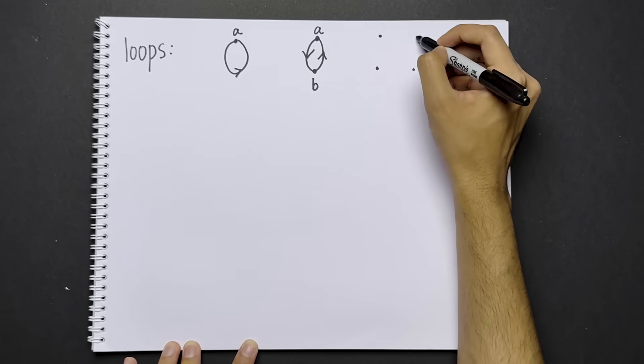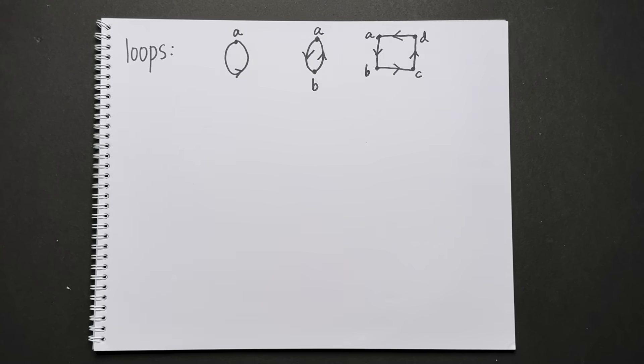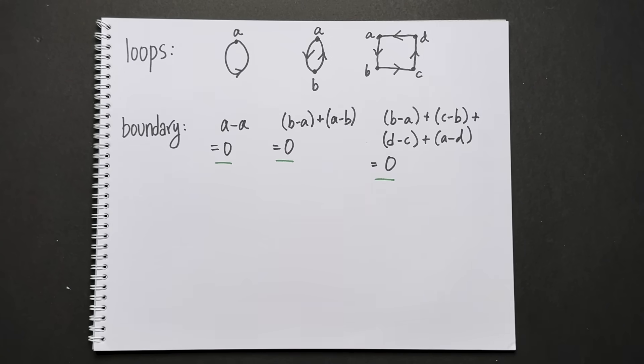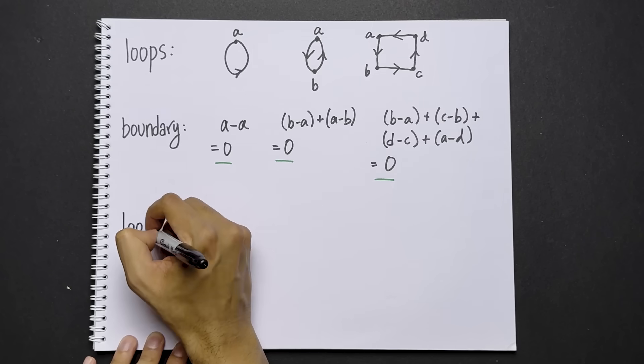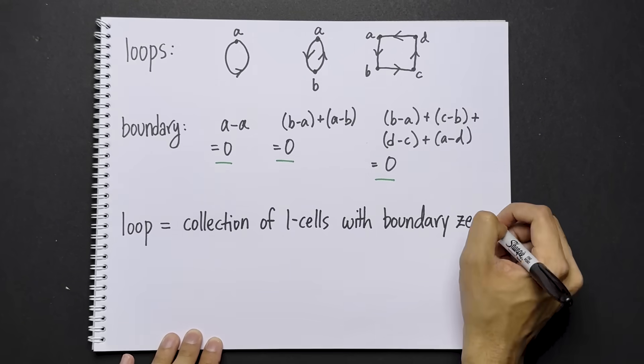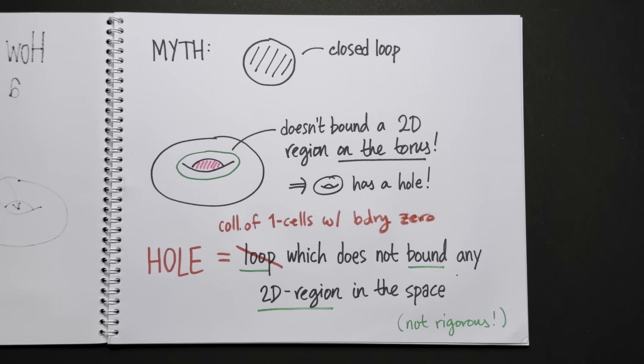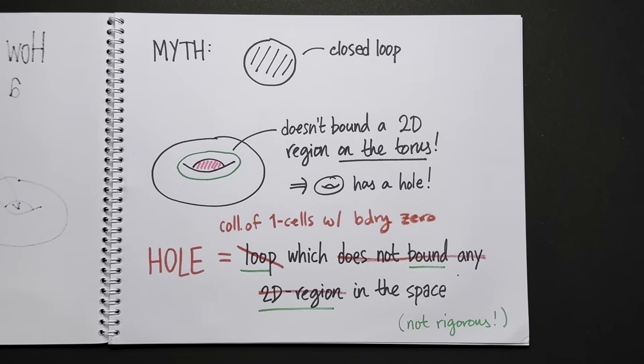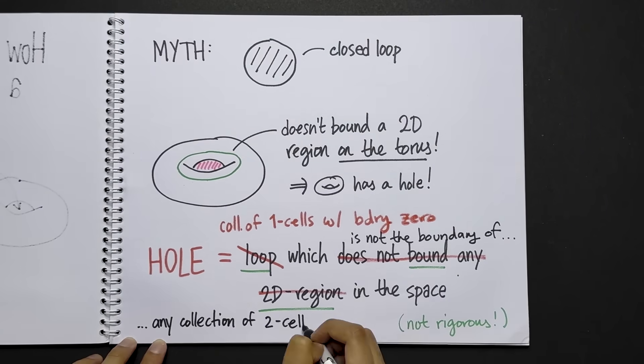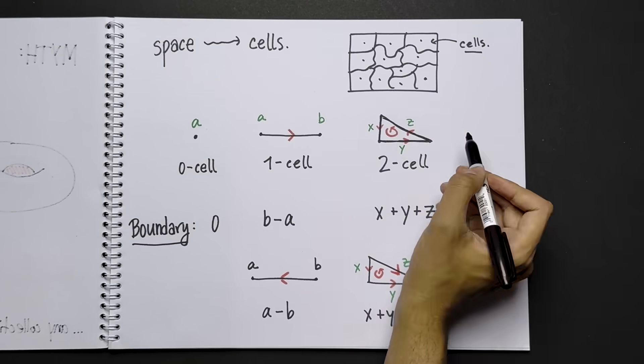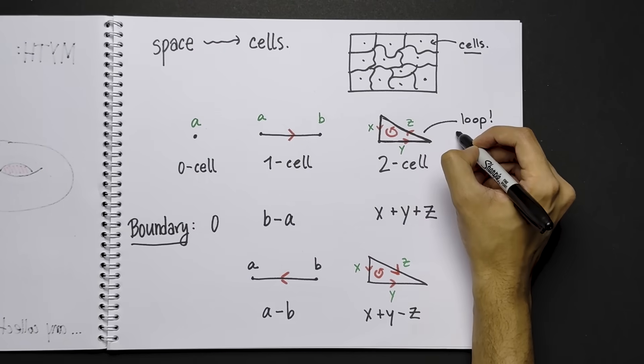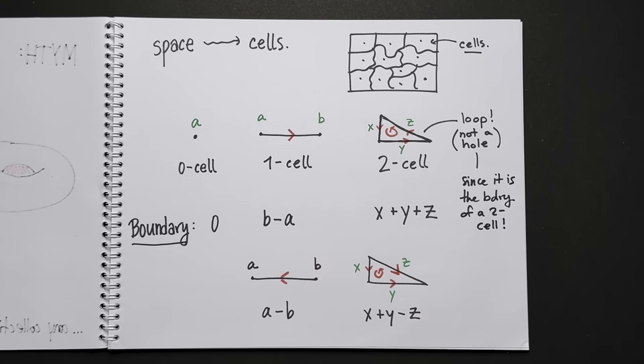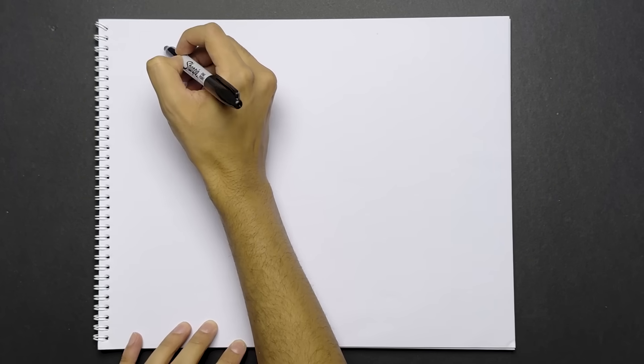Well, what is a loop? Here are several collections of one cells that are loops. Let's calculate their boundaries. Notice that their boundaries are all zero. Using this intuition we say, a loop is a collection of one cells with boundary zero. What does it mean that the loop doesn't bound any 2D region in the space? It means that it isn't the boundary of any collection of two cells in the space. For example, the boundary of this triangle is a loop, but it does not represent a hole, because it's the boundary of a two cell, namely the triangle. So far, this is pretty abstract, so let's look at some concrete cases.